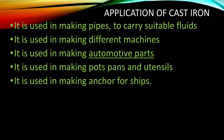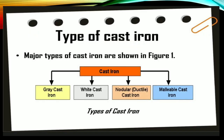Applications of cast iron: used for making pipes to carry suitable fluids, making machine components, and machine foundations. The foundation of all machine tools — lathe, milling, drilling, planer, shaper — is made up of cast iron. You can also find cast iron in pot pans, utensils, and anchoring of shapes. Types of cast iron: grey cast iron, white cast iron, ductile cast iron, and malleable cast iron.